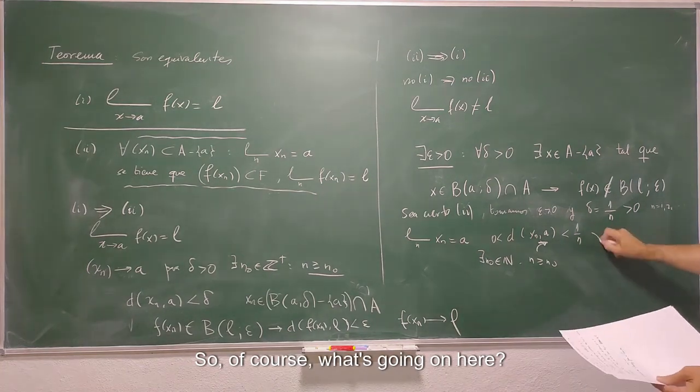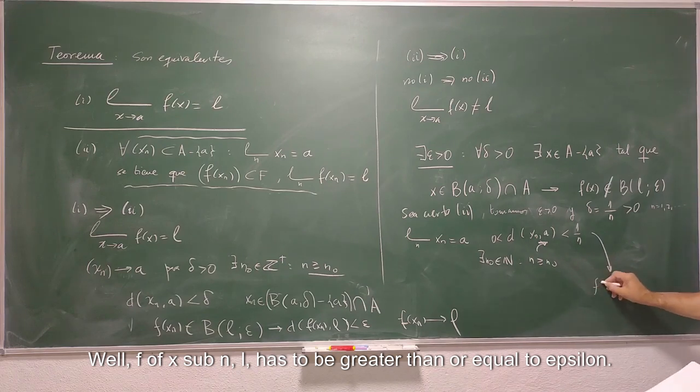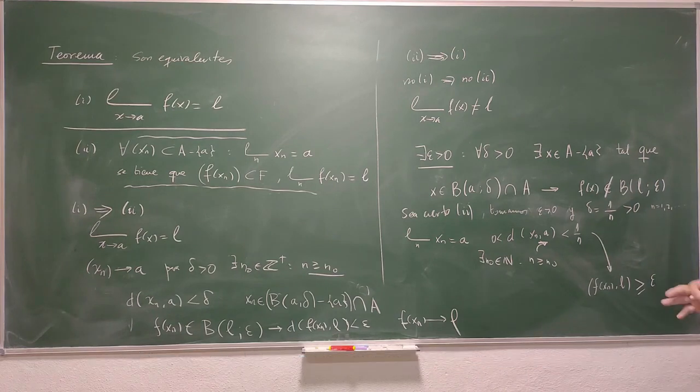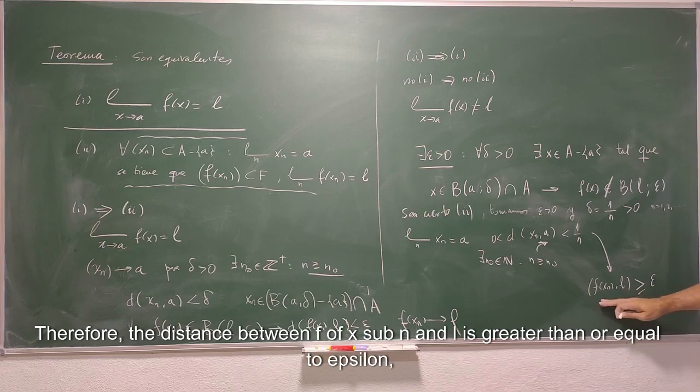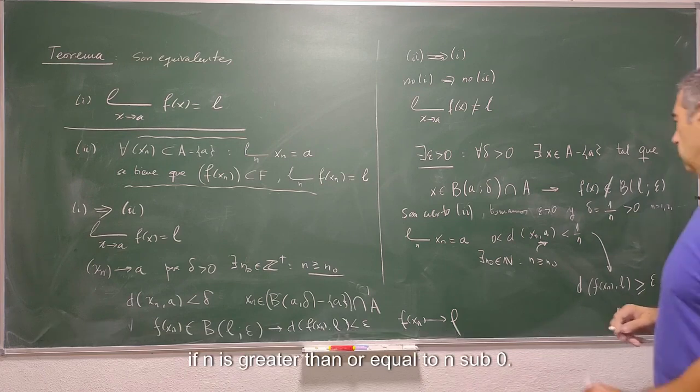So, of course, what's going on here? Well, f of x sub n, L, has to be greater than or equal to epsilon. It's off the ball, okay? Therefore, the distance between f of x sub n and L is greater than or equal to epsilon if n is greater than or equal to n sub 0.